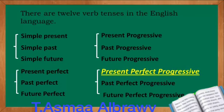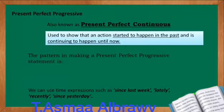This lesson will talk about present perfect progressive. Present perfect progressive is also known as present perfect continuous tense. This is used to show that an action started to happen in the past and is continuing to happen until now.